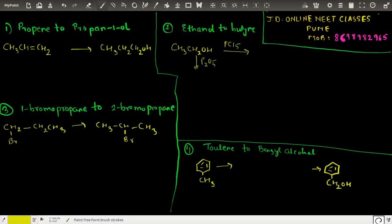Hello friends and welcome to this session on organic chemistry. We are talking about the chapter on haloalkanes and conversions in the NCERT chapter. So let's start the class. The first conversion is propene to propan-1-ol.